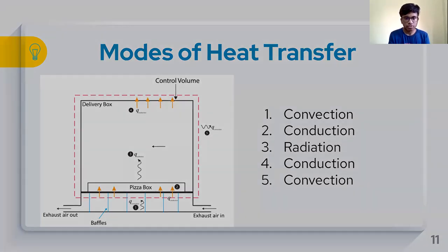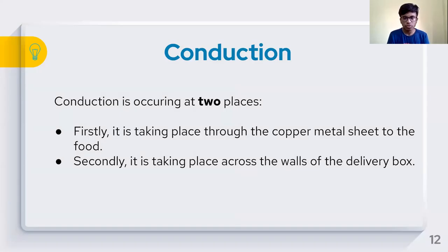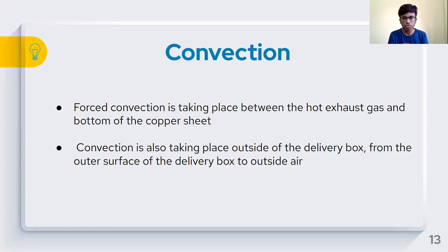Conduction or heat transfer by diffusion is the transport of energy from more energetic to less energetic particles of a substance due to a temperature gradient. In the problem statement, conduction is occurring at two places. One is taking place through the copper metal sheet where temperature at the bottom is higher than above, so heat flows from the lower level to the higher one. The second place is through the delivery box. Heat is transferred from the delivery box to the outer surroundings.